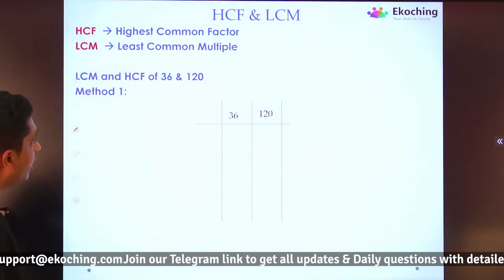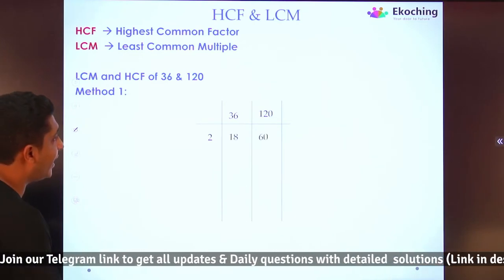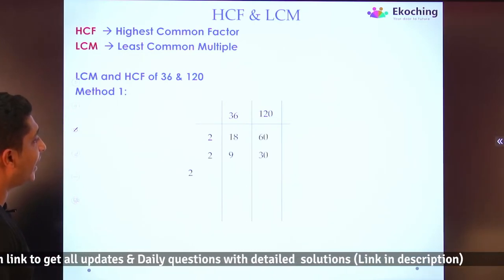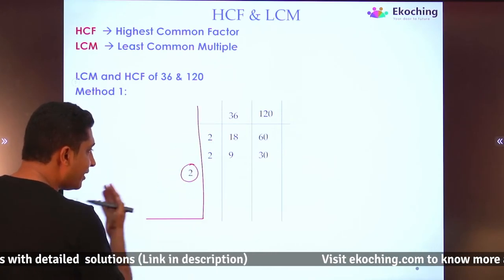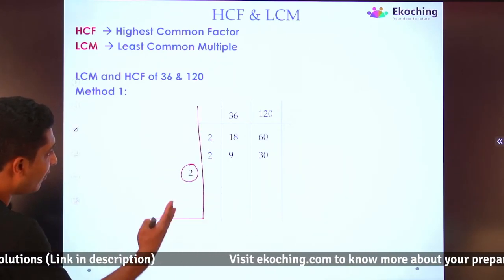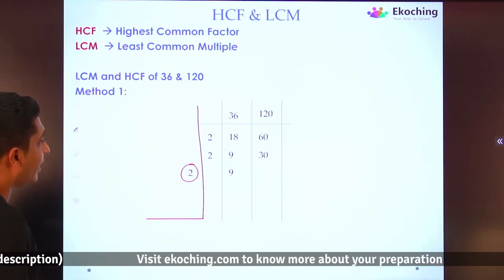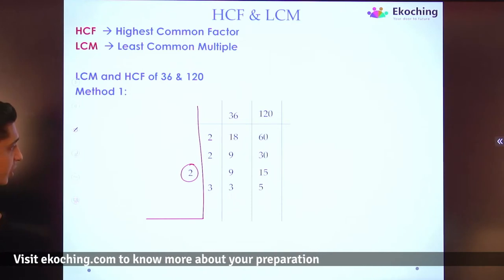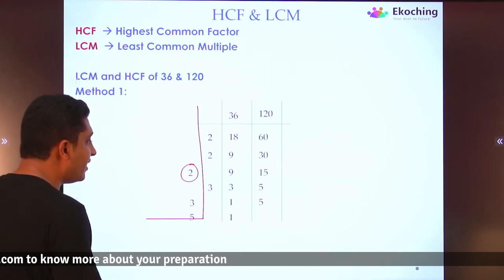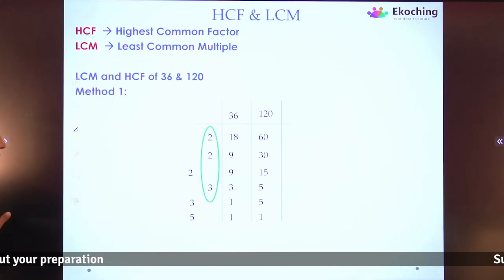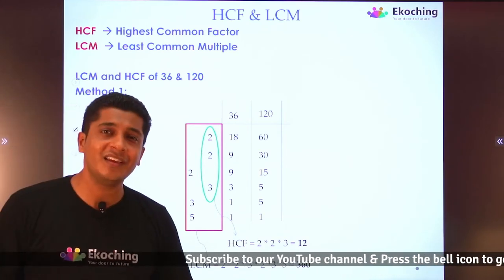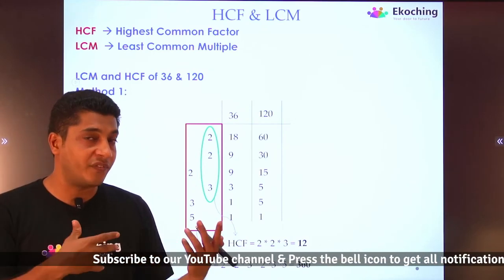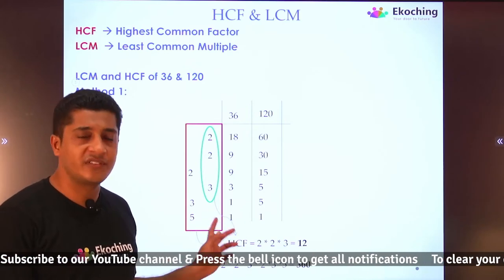Let me repeat. We divided 36 and 120 first by 2, getting 18 and 60. Again by 2, getting 9 and 30. Now I divide 30 by 2 but leave 9 outside — giving 9 and 15. Then 3 divides both, giving 3 and 5. Then 3 divides only one, and 5 divides only one, reaching 1 and 1. The part where both were divided together is your HCF: 2 × 3 = 12. The entire product is your LCM: 360. This is the method we used in school.